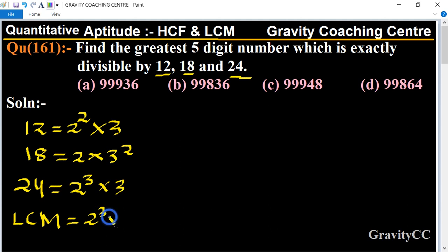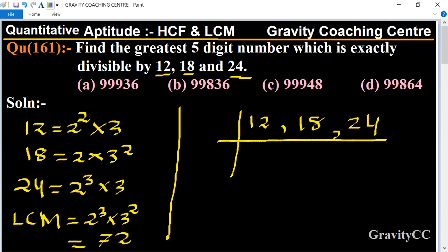The shortcut formula: list 12, 18, 24. Divide by 4. So 24 cancels by 12, and from table of 6, 6×3 is 18 and 6×4 is 24.